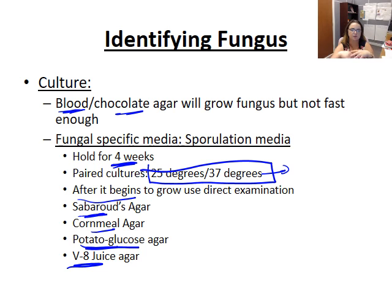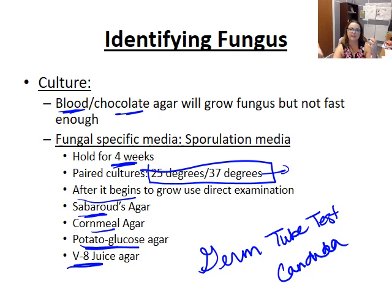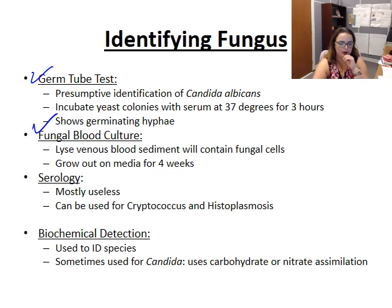The venous blood is lysed and centrifuged, and the sediment containing cellular debris and fungal cells is plated on fungal-specific media for four weeks. There is also a germ tube test, used specifically for Candida albicans. Yeast colonies are mixed with serum and incubated at 37°C for three hours — a relatively quick test. Under microscopy you see tube-like structures that are germinating hyphae emerging from yeast cells. A false positive can occasionally occur with Candida tropicalis.